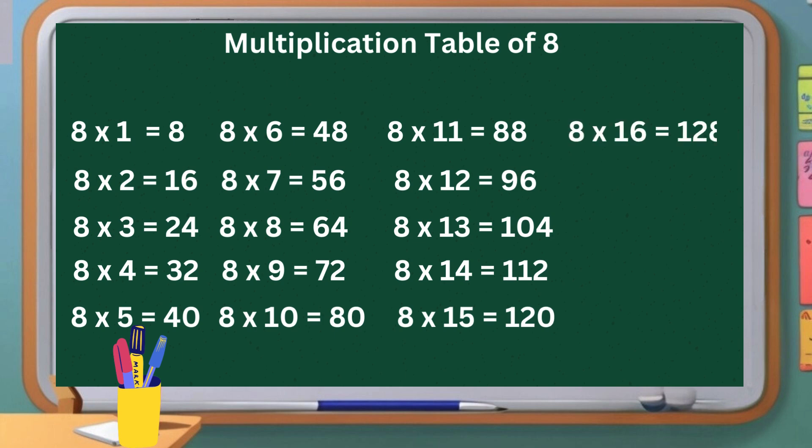Eight sixteens are one hundred and twenty-eight. Eight seventeens are one hundred and thirty-six. Eight eighteens are one hundred and forty-four. Eight nineteens are one hundred and fifty-two. Eight twenties are one hundred and sixty.